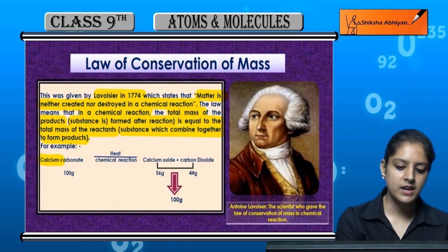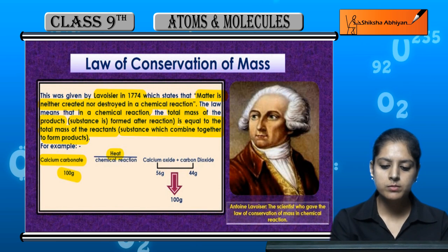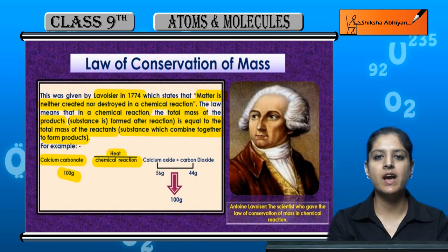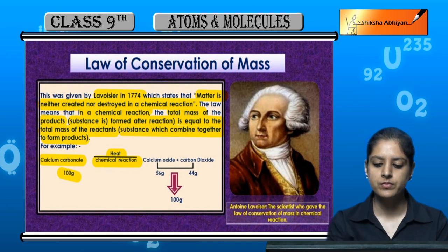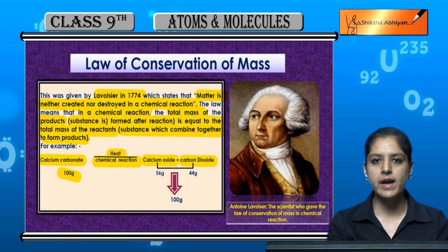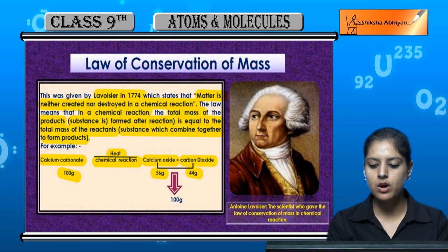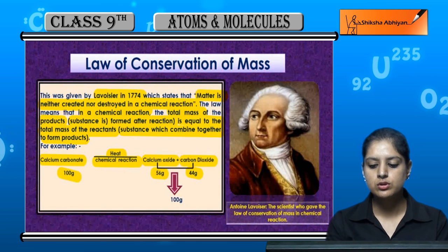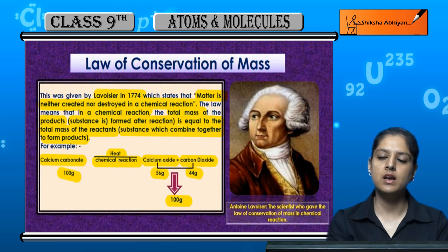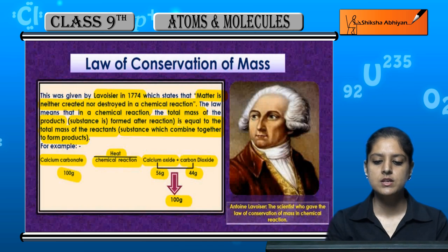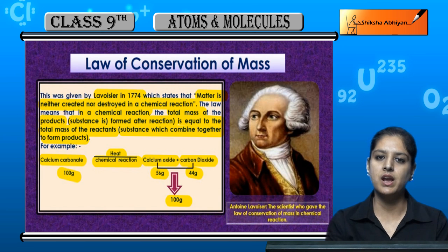For example, if we have 100 grams of calcium carbonate as a reactant and heat it, a chemical reaction occurs. Calcium carbonate breaks into calcium oxide and carbon dioxide. Calcium oxide forms 56 grams and carbon dioxide forms 44 grams, giving a total of 100 grams. So the mass is conserved — it is neither created nor destroyed.